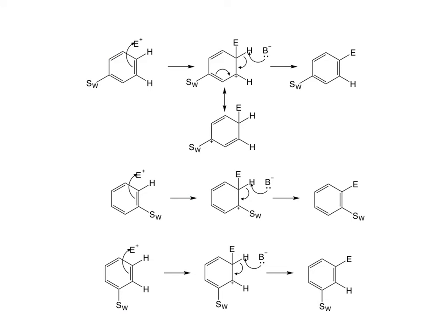If we look at an electron withdrawing substituent — some electronegative atom that doesn't have an unshared pair of electrons — and look at para interaction: there is one carbocation form where our electron withdrawing group is trying to pull electron density away from our carbocation. That particularly destabilizes the carbocation, and so it tends to work against attack at a para position.